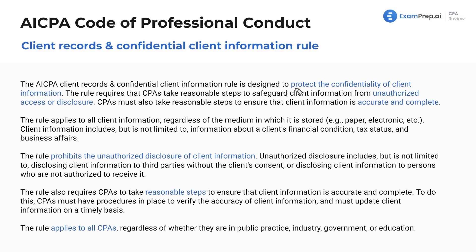This rule is designed to protect the confidentiality of client information. The rule requires that CPAs take reasonable steps to safeguard client information from unauthorized access or disclosure. So what is that reasonable action? You're not going to store client records in a vault 5,000 feet below the ground. What's reasonable is that you send it through verified mail services, and if something's critically important, you're going to use some sort of secure software to help you send or store it. You're not going to randomly keep everything in an unlocked file drawer in a public area. You're going to take reasonable steps to ensure that information is accurate, complete, stored, and not able to be stolen or manipulated.